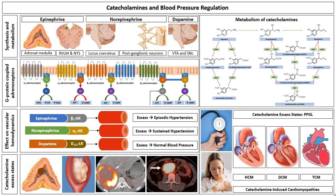Chapter 2 by Cornelius J. Fernandez, Fahmy W. Hanna, Karel Pakak, and Matthew Nazari is on catecholamines and blood pressure regulation. This basic science chapter gives details about the synthesis and metabolism of catecholamines, their receptors and effects on vascular hemodynamics, and various catecholamine excess and deficiency states associated with disease including endocrine hypertension.